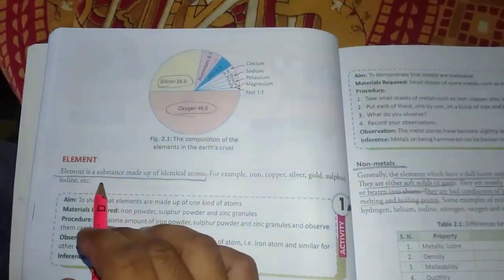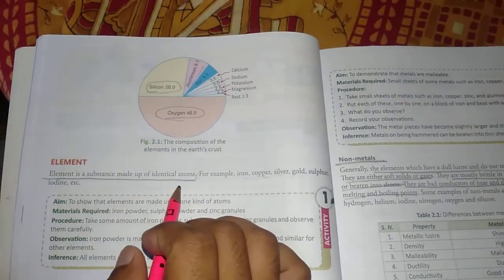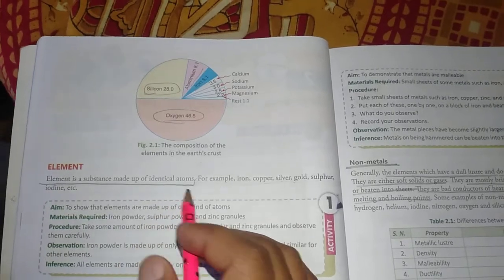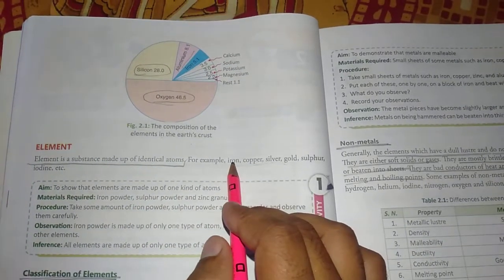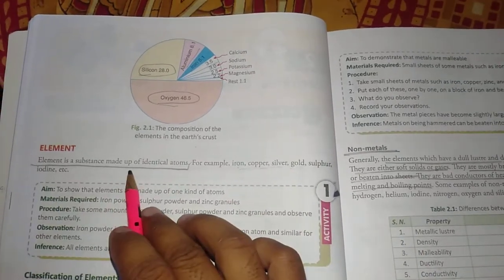Now what are elements? Elements are identical items which are made of one type of atom. For example, iron, copper, silver, gold, sulfur, iodine, etc.